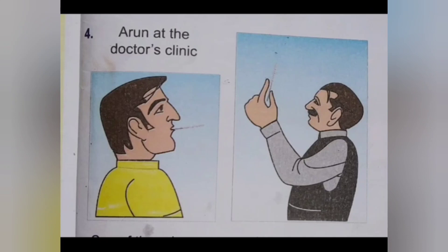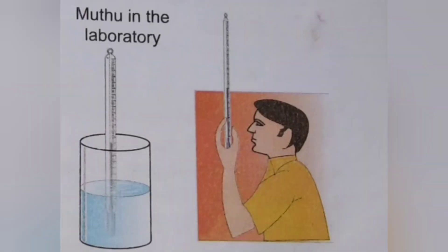For the clinical thermometer, temperature can be read after removing it from the armpit or mouth — as shown in the diagram with a patient at a doctor's clinic. For the laboratory thermometer, temperature is read while keeping the thermometer in the source, such as a liquid in a beaker. If removed, the mercury level falls and the reading will be wrong.